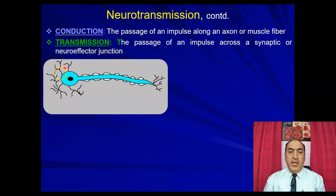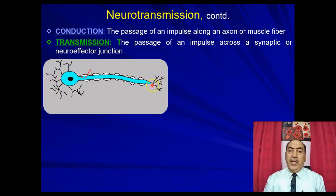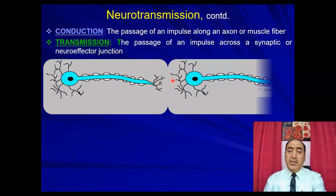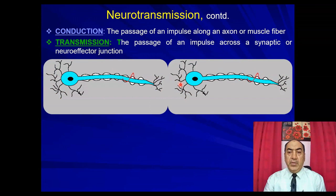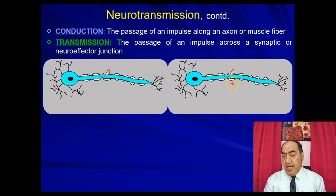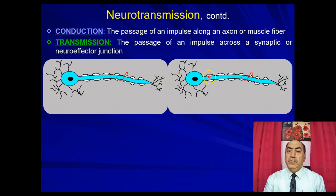The animation shows the impulse starting from the cell body, traveling across the myelinated axon as action potentials to the nerve ending, where a neurotransmitter is released. This neurotransmitter affects the nearby nerve cell or, if it's the postganglionic neuron, affects the effector organ directly. So the sequence is conduction, then transmission, then conduction again, and finally transmission to the effector organ.